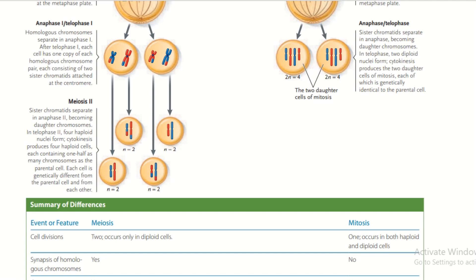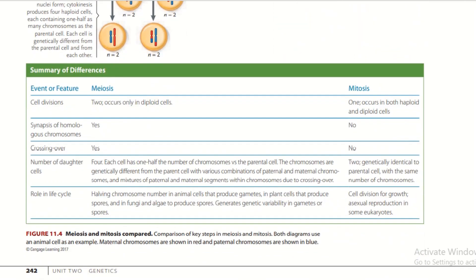In Meiosis II, sister chromatids separate in Anaphase II, becoming daughter chromosomes. In Telophase II, four haploid nuclei form, and cytokinesis produces four haploid cells, each containing half as many chromosomes as the parental cell. Each cell is genetically different from the parental cells and from each other.